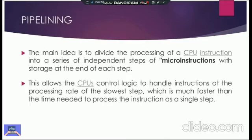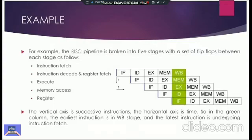This allows the CPU's control logic to handle instructions at a processing rate of the slowest step, which is much faster than the time needed to process the instruction as a single step. So here we have been given an example of pipelining. You can see that these are the five stages involved. The first one is instruction fetch, instruction decode and register fetch, execute, memory access, and register. These vertical parts are the instructions given here, and this horizontal part is time, the instance of time that is taken to be executed.